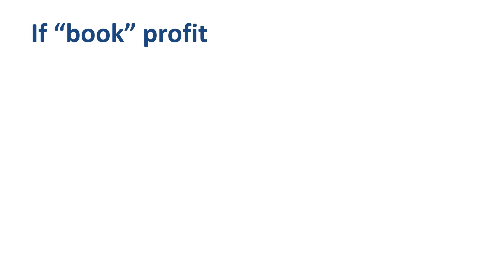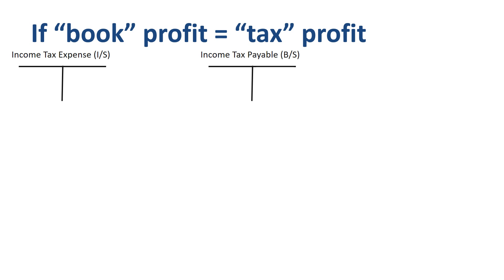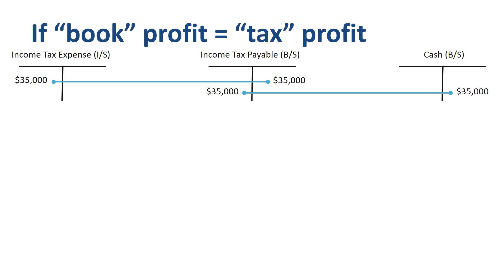Let's review what that looks like in journal entries. If book profit equals tax profit, then the journal entry for recording the income tax expense is: debit income tax expense in the income statement, and credit income tax payable on the balance sheet for the same amount. When the tax payable is subsequently transferred to the tax authorities, you debit income tax payable and credit cash.